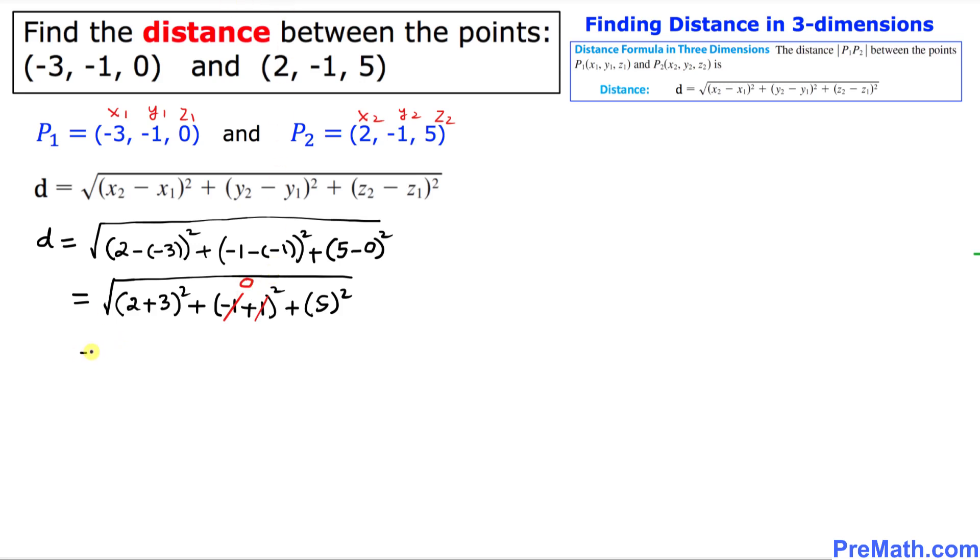Over here, we just simply got 5 (since 2 plus 3 is 5) squared, plus this becomes 0 squared, and this is simply 5 squared as well. Let's simplify furthermore. So this is 25, 5 squared is 25...